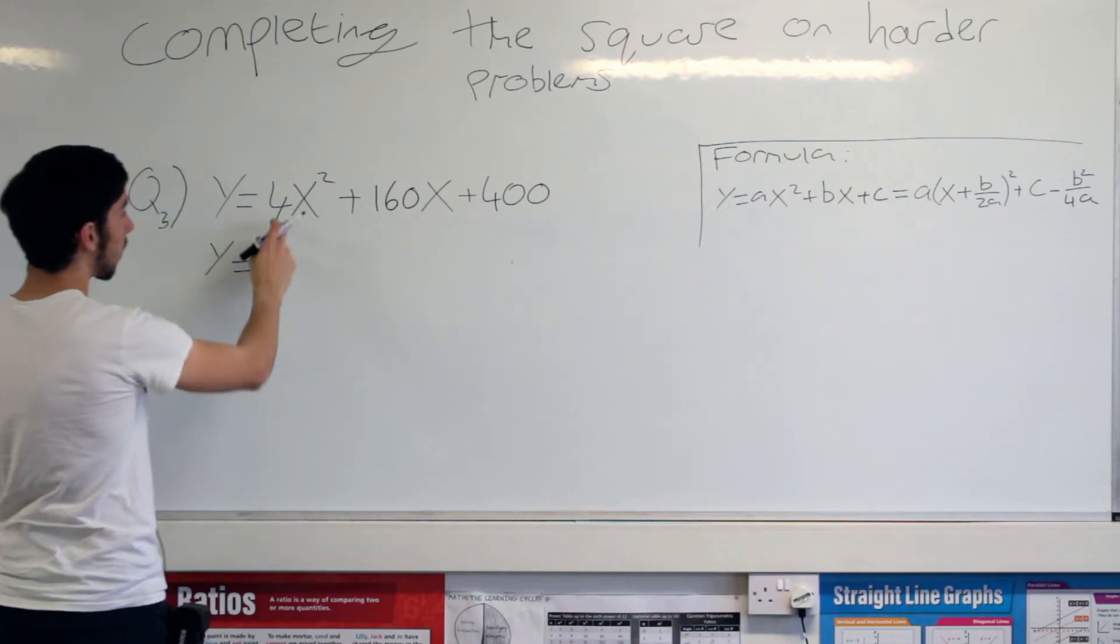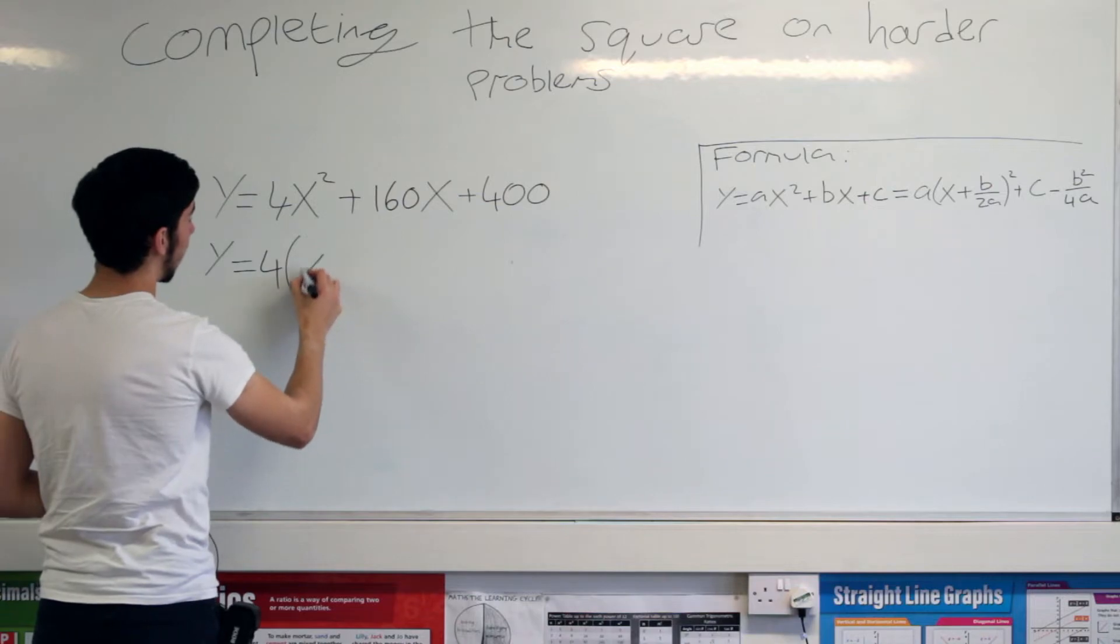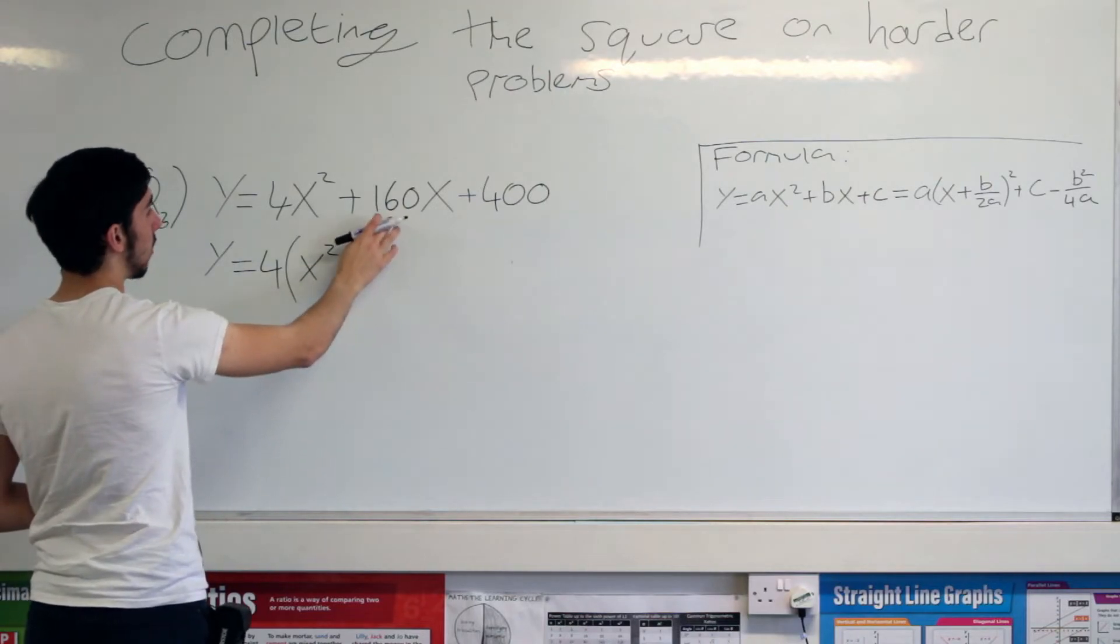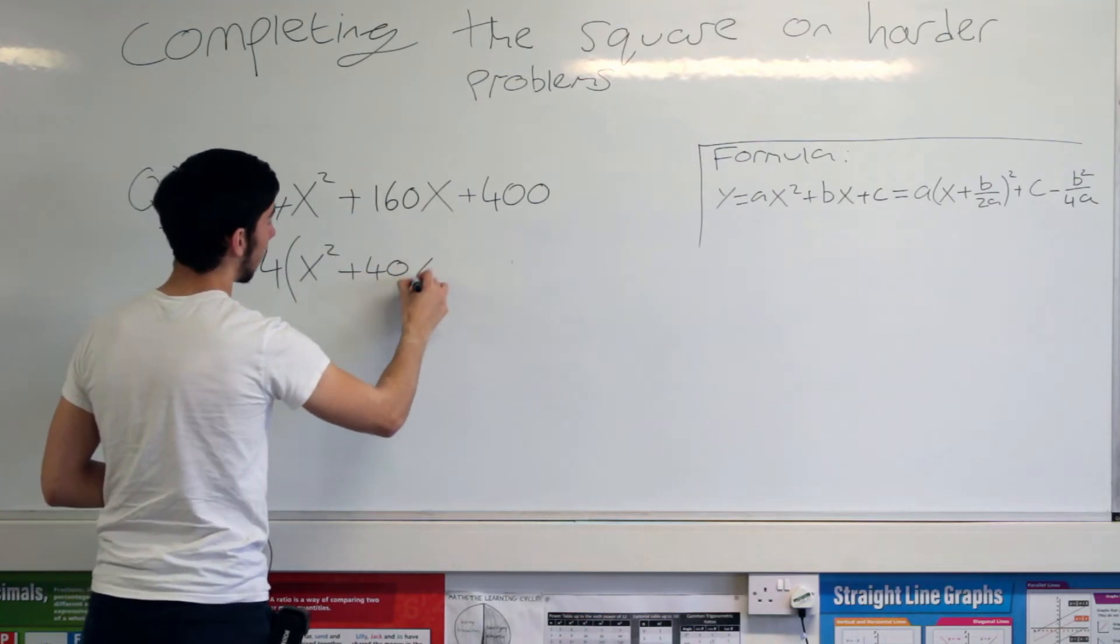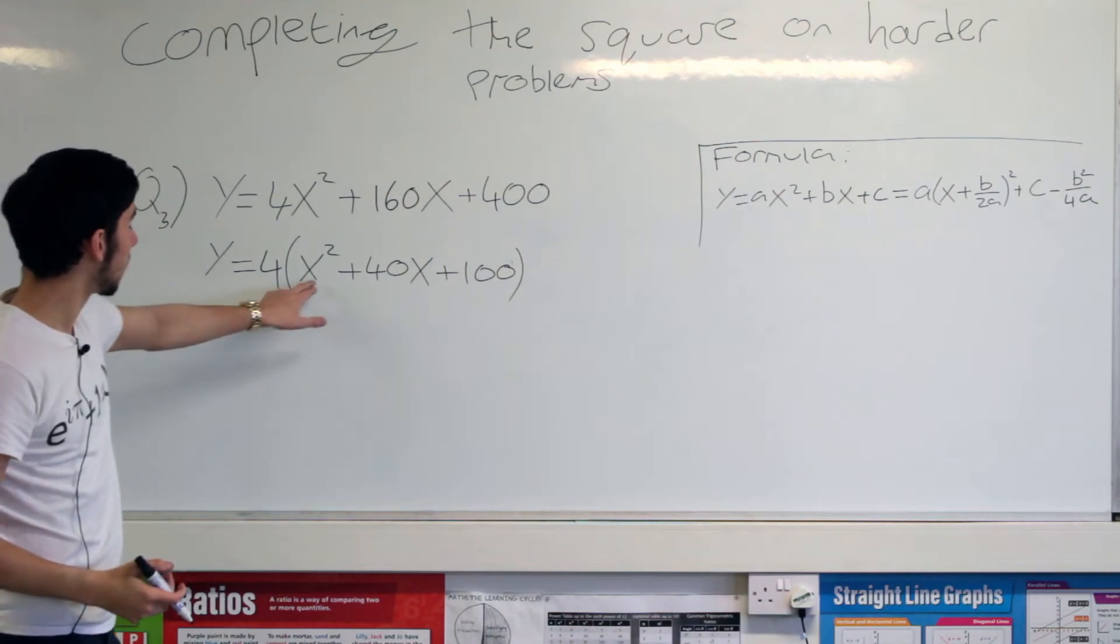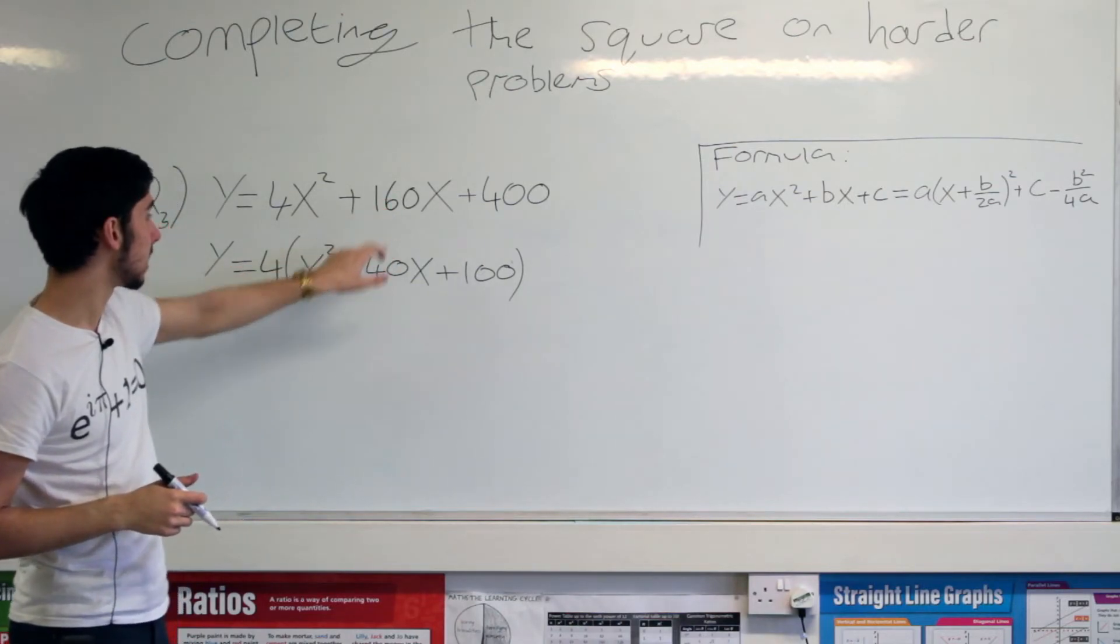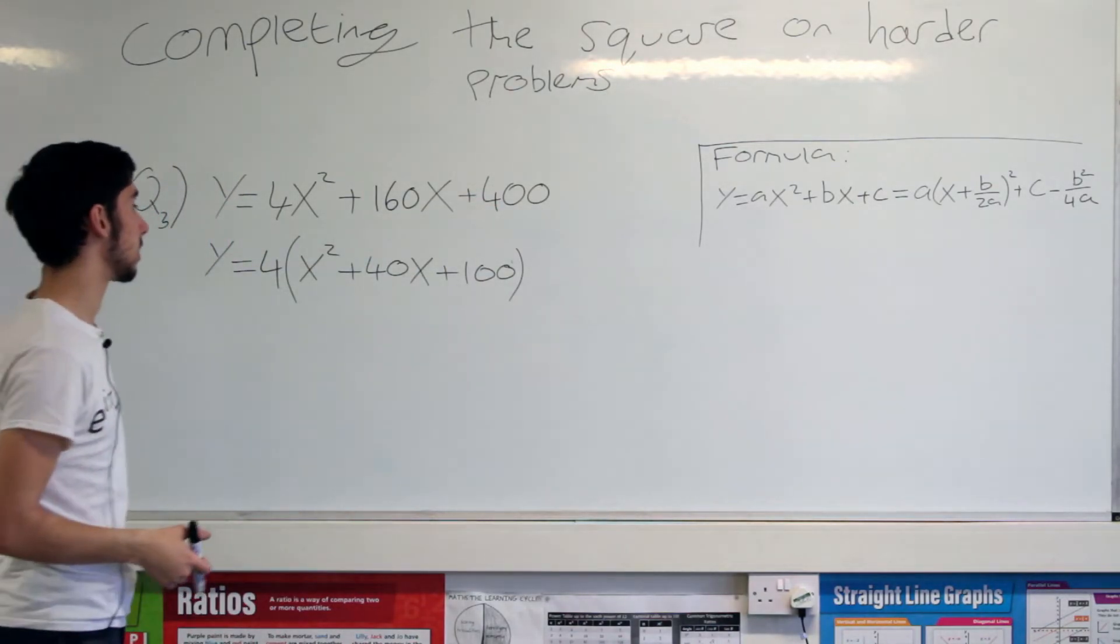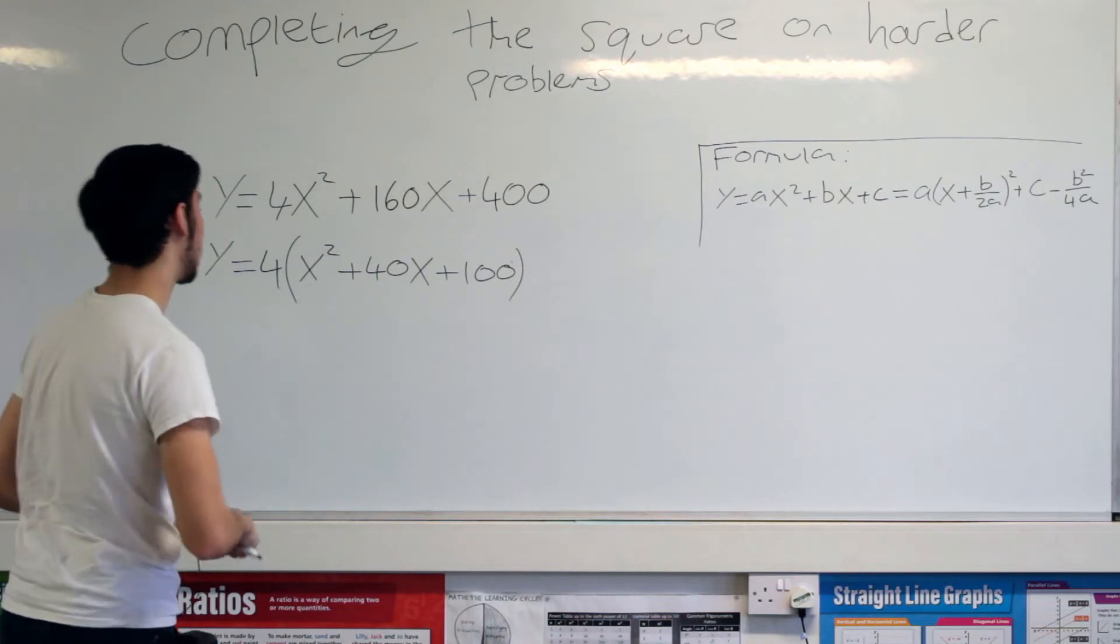What you're going to do is whatever is in front of the x squared, write that number. Okay, because we're going to factor it out. So I'm going to open up a bracket, and I'm just going to write everything in this bracket is going to be four times smaller than what's up here. So x squared, 160x, that's going to go to 40x, and 400 is going to go to 100. Why? Well, 4 times x squared is 4x squared. 4 times 40x is 160x. 4 times 100 is 400, so this and this are equal. We've just factorized a 4 out. Why we factorized a 4 out? Because now this thing here, this thing, we can complete the square on, and it's actually quite nice.